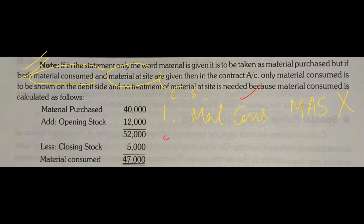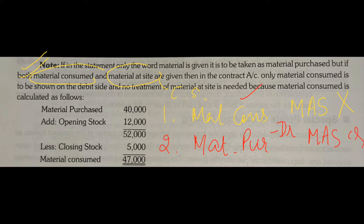Now the second method: whatever information is given, you will first calculate the material purchased. Then you record the material purchased on the debit side, and the material at site — the closing stock — you record on the credit side. So these are the two ways to adjust your figures. The logic is: material purchased equals whatever you purchased during the year plus any opening stock brought forward. If we then subtract the closing stock, we get material consumed. In the consumed figure, the closing stock is already adjusted, so material at site does not need to be recorded again. So we record material purchased on debit and material at site on credit at their respective places.